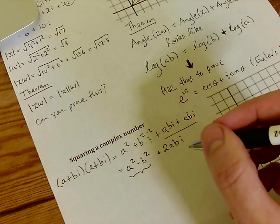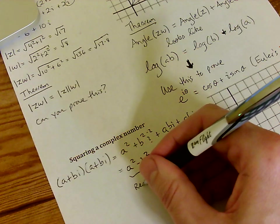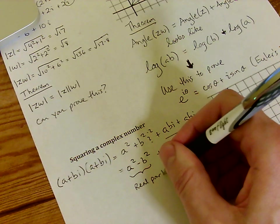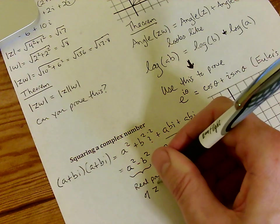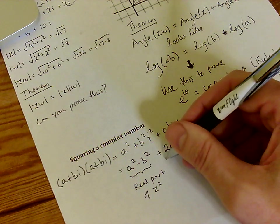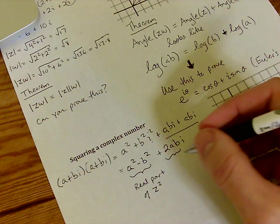This is a real number and this is the real part of z squared. This 2ab is the imaginary part of z squared.